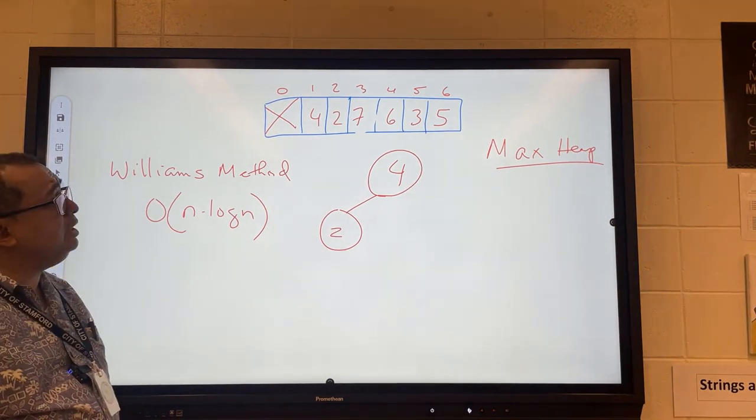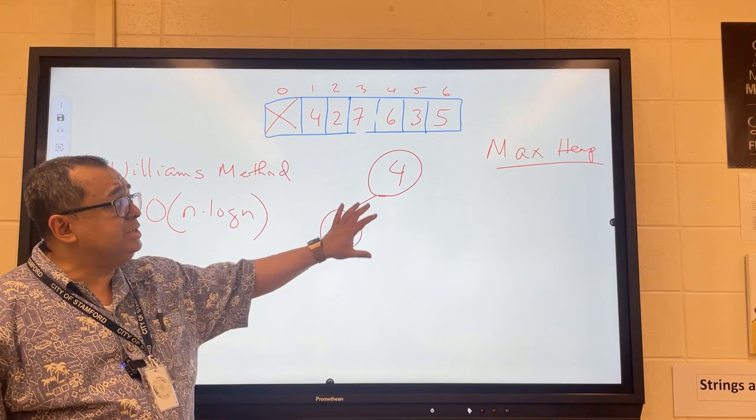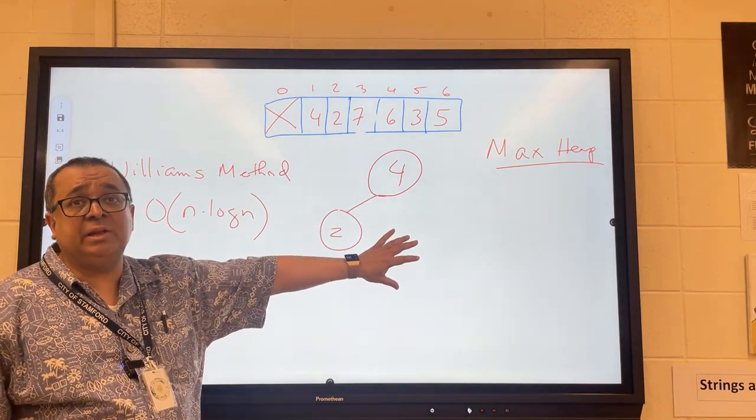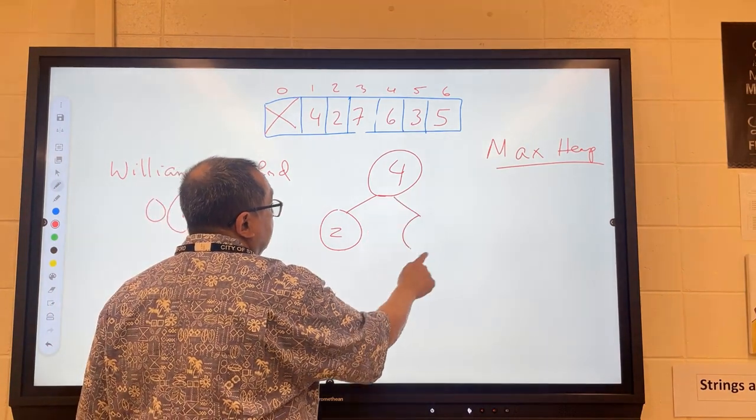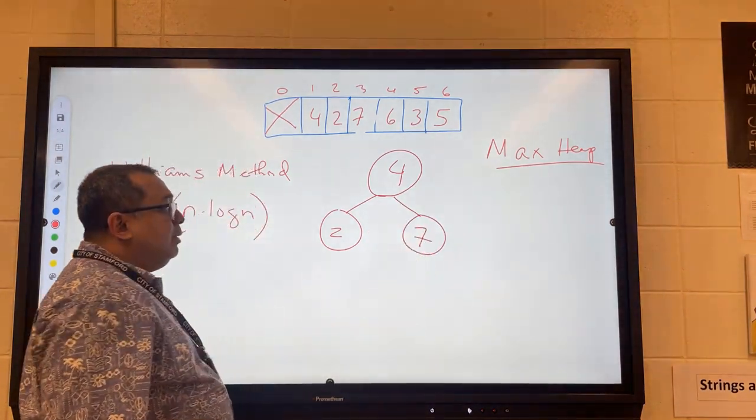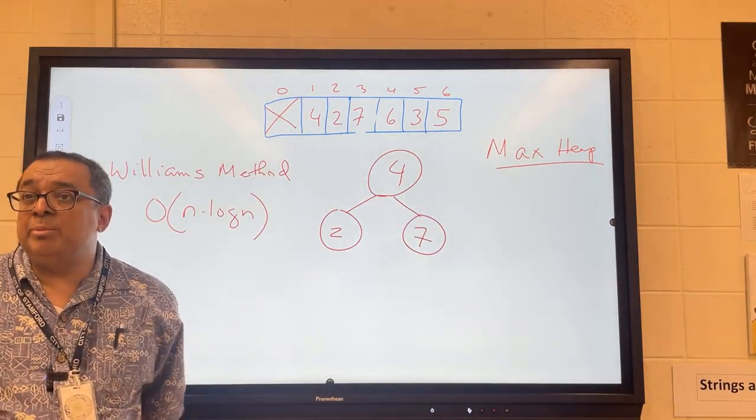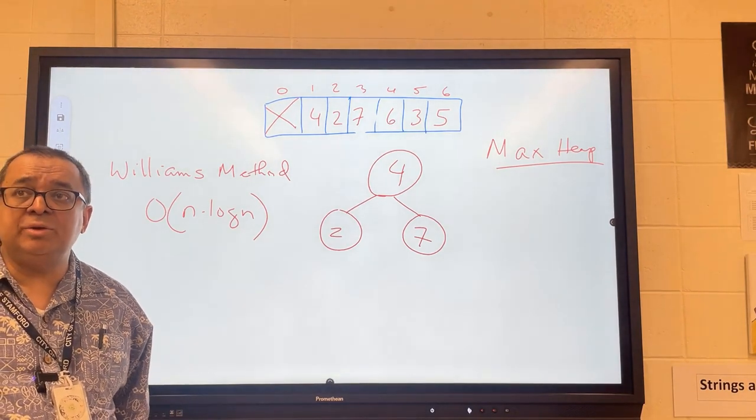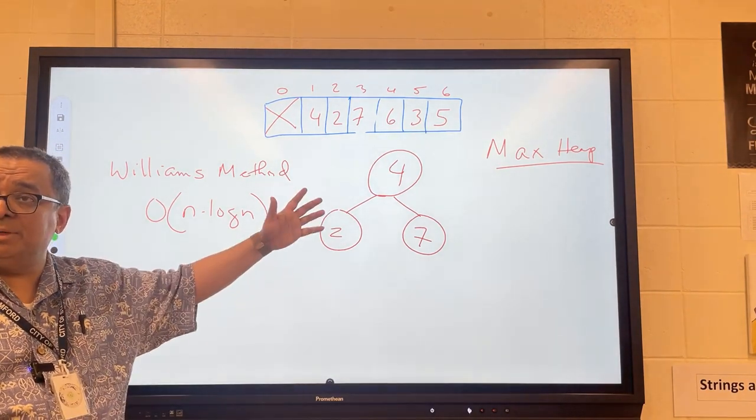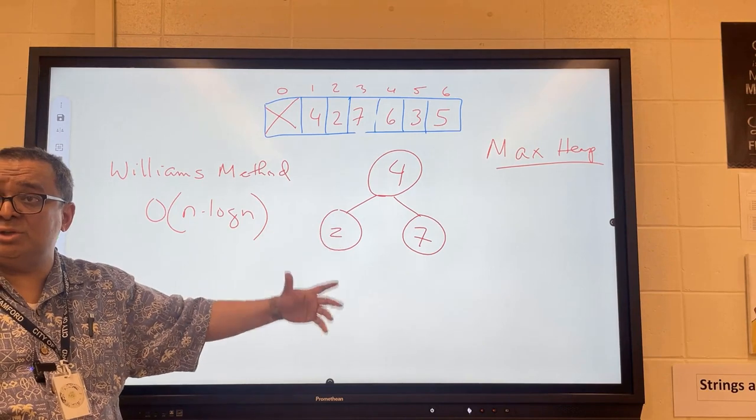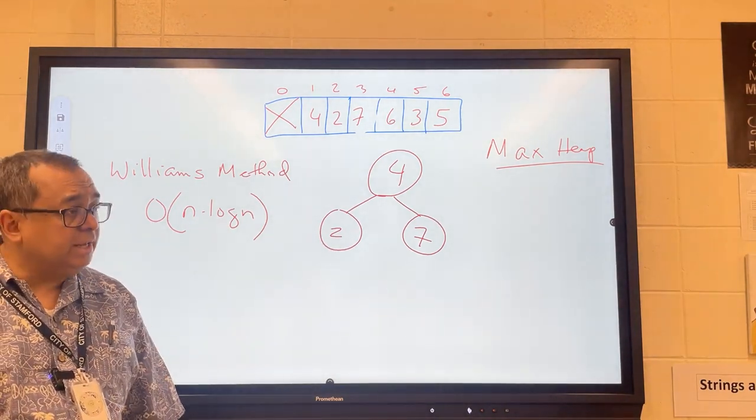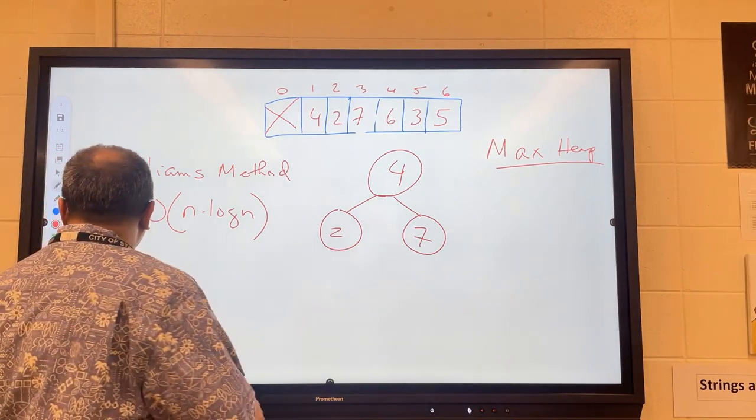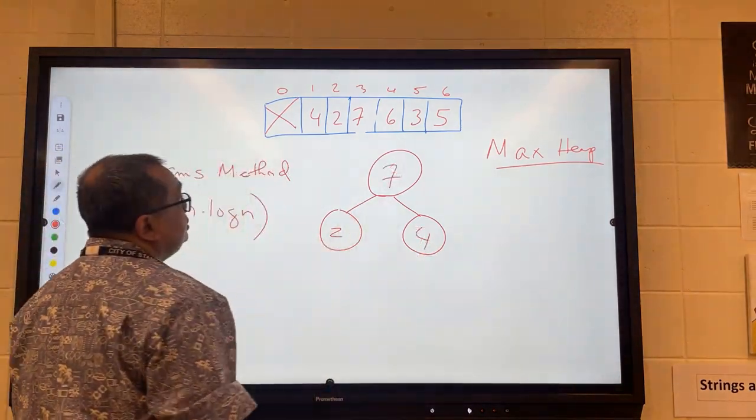So now we're going to insert the 7. When we insert into a heap we always insert at the next available slot on the lowest level. So here we're going to insert the 7 right here. And now what I want to know is do I still have a heap? I do not. So now I need to bubble up like we showed before on the insertion process. So what do I need to swap here? So I'm going to swap the 7 and the 4 and so far we're good.